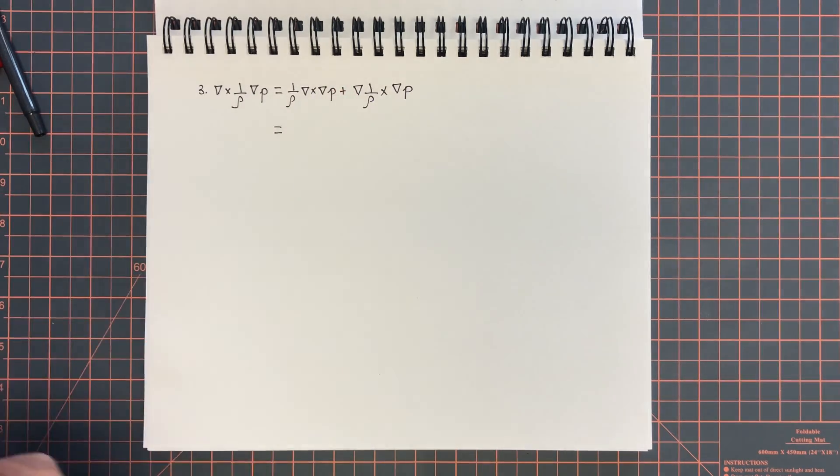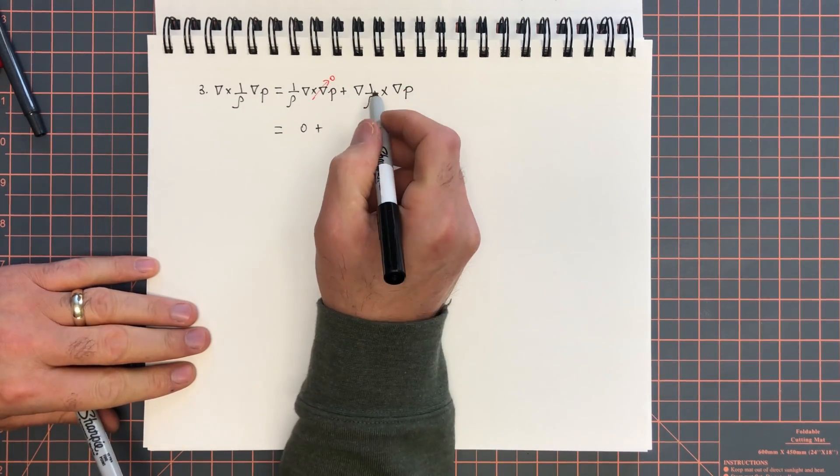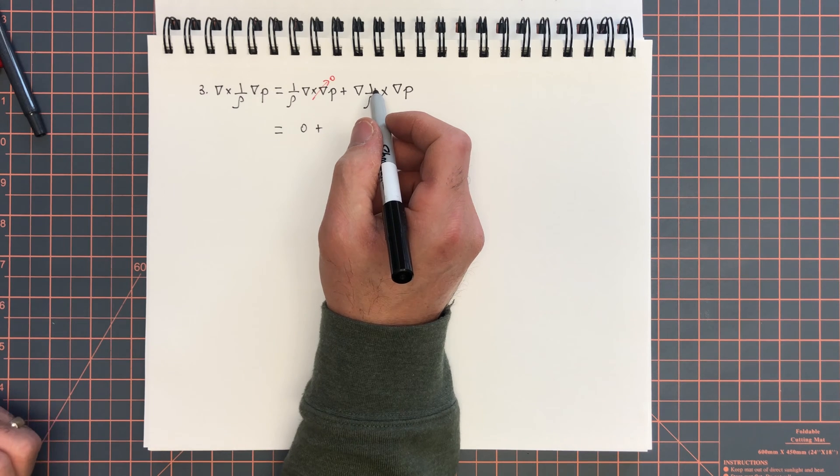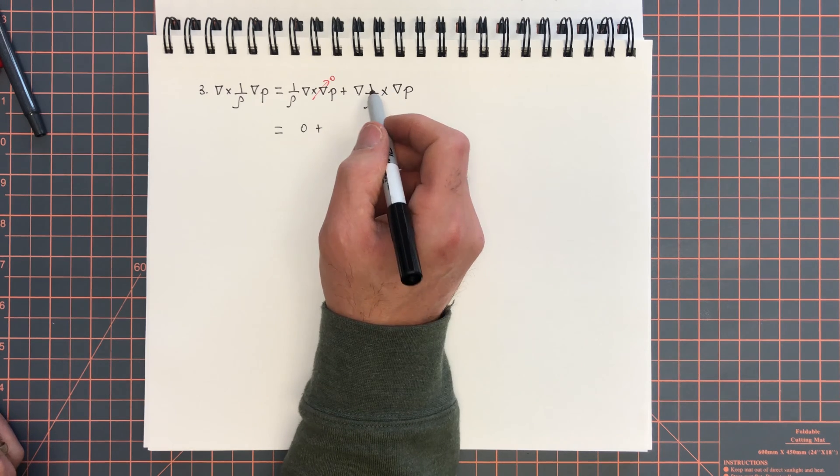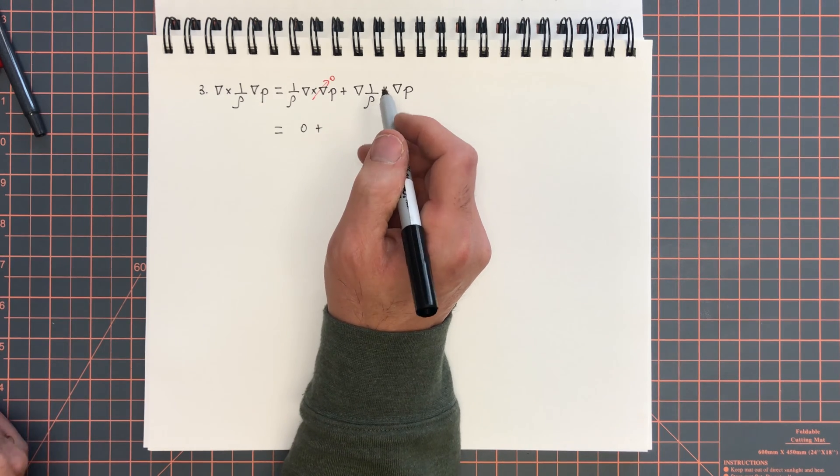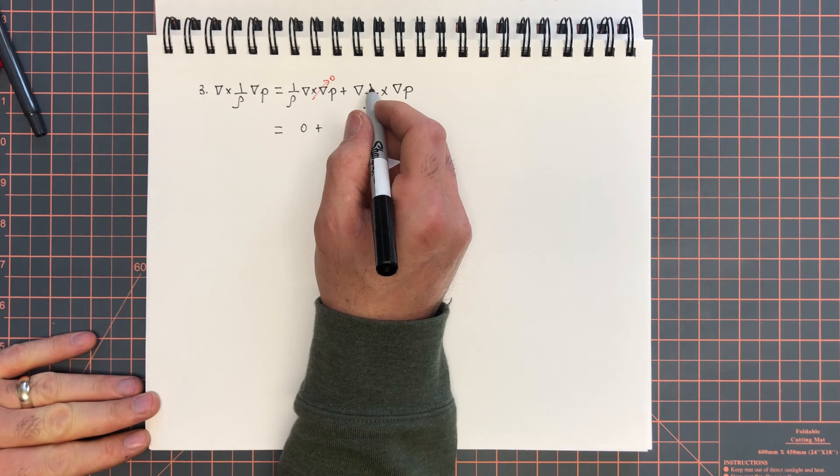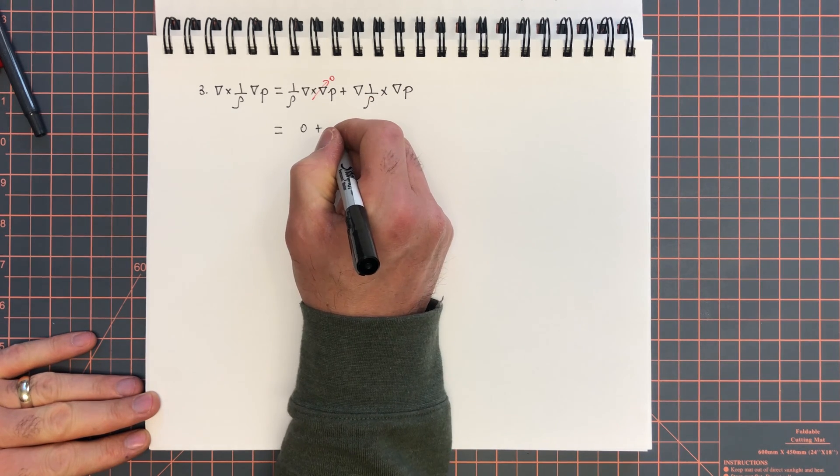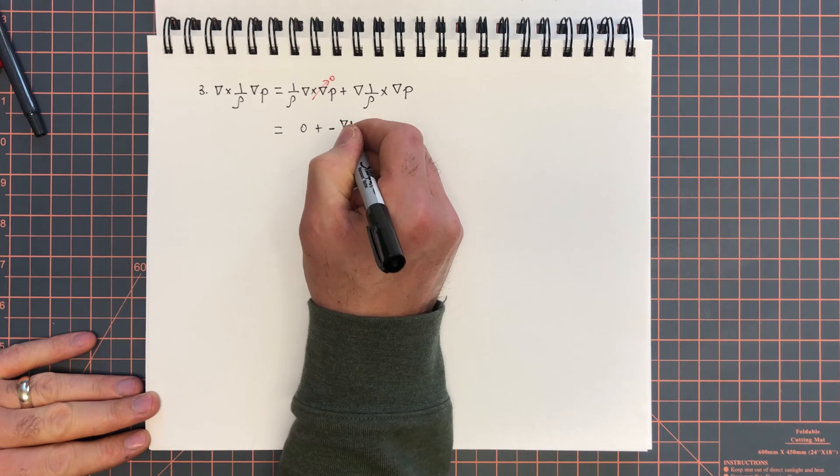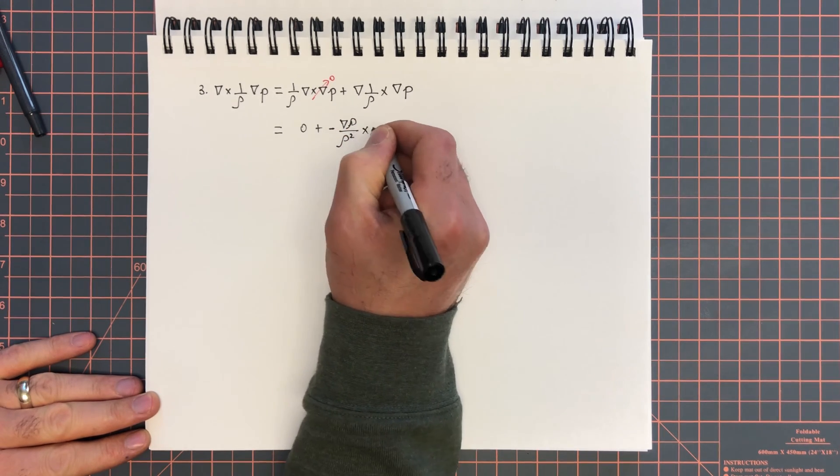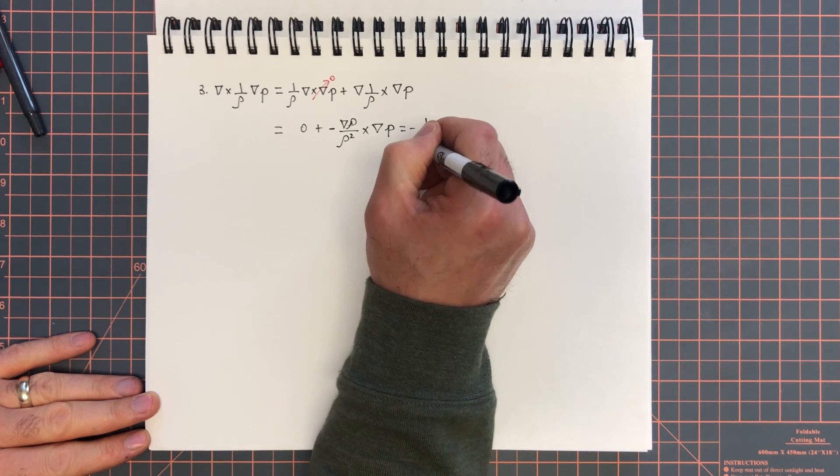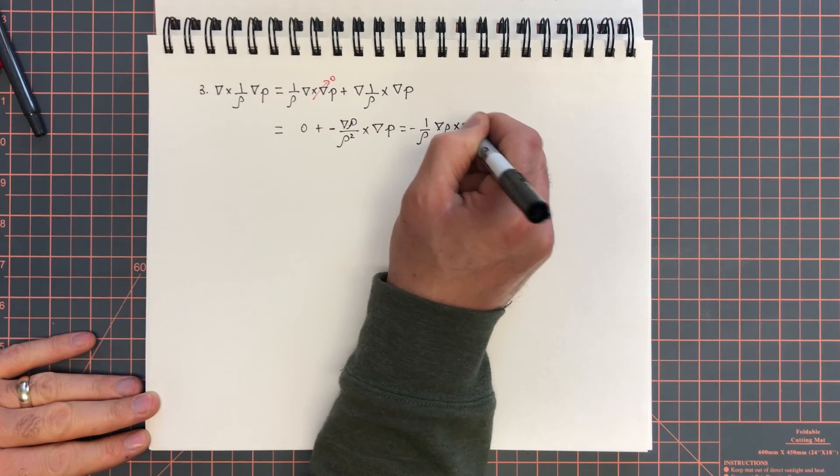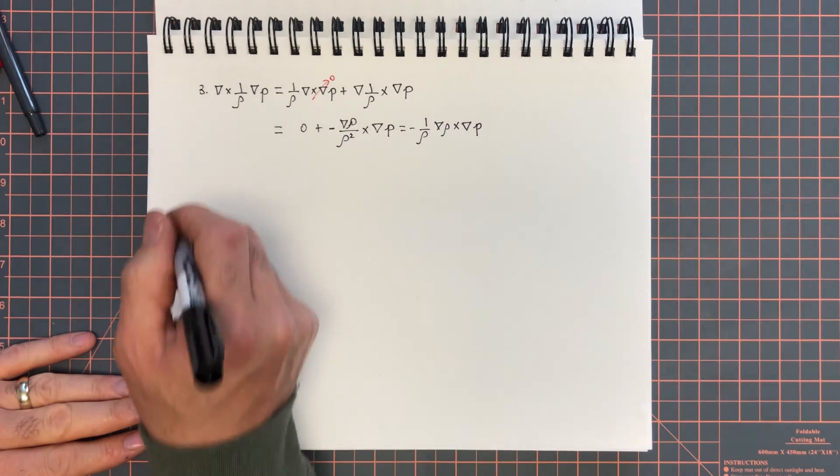The curl of one over rho grad p is one over rho curl grad p plus grad one over rho cross grad p. And that is going to give us the following. This guy is 0 by virtue of the curl grad 0. So that's 0 plus, what is grad one over rho? Same thing with the derivative. The derivative of u over v, u prime v minus v prime u over v squared. So that gives us minus grad rho over rho squared cross grad p, or minus 1 over rho squared grad rho cross grad p. This is going to be a very important term.